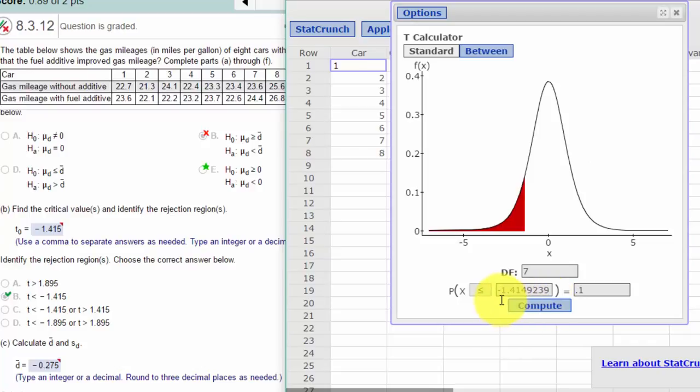And we get a critical value of T, T sub 0, of minus 1.415, and that is the answer that we need. The rejection region, of course, any T that we calculate, the standardized test statistic T that is less than minus 1.415, would fall in the rejection region, and therefore we would reject the null.